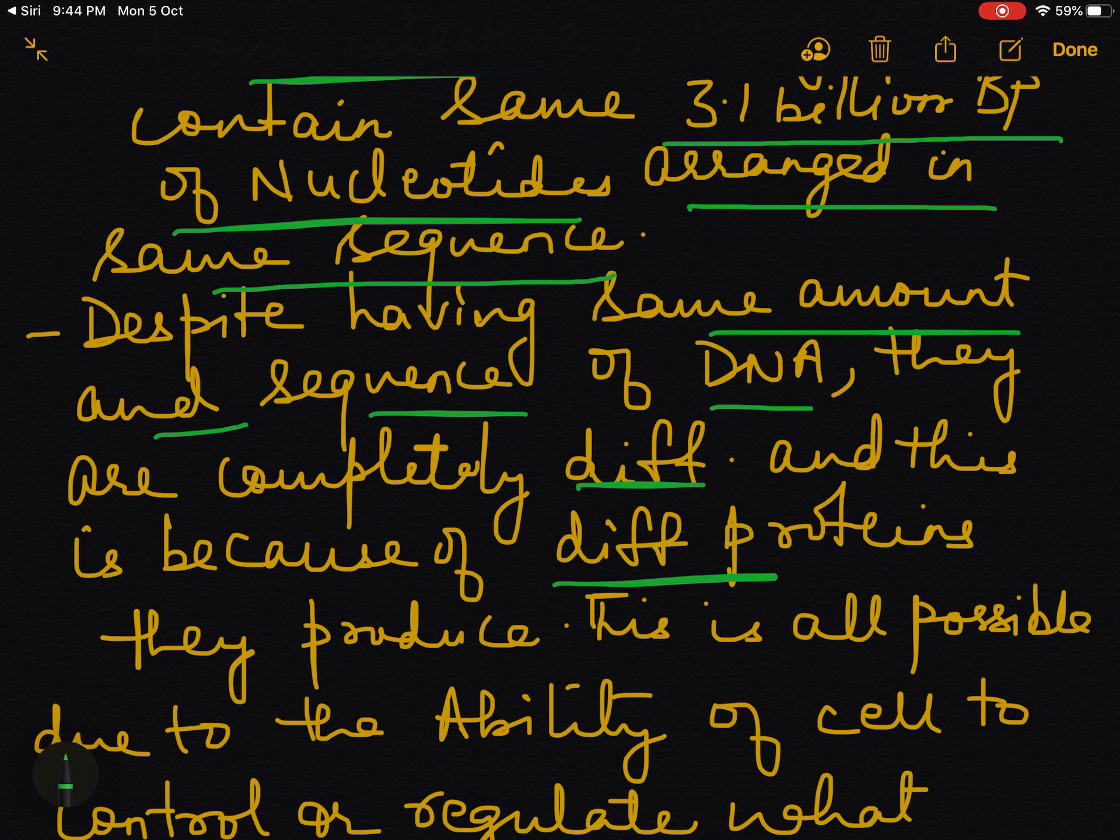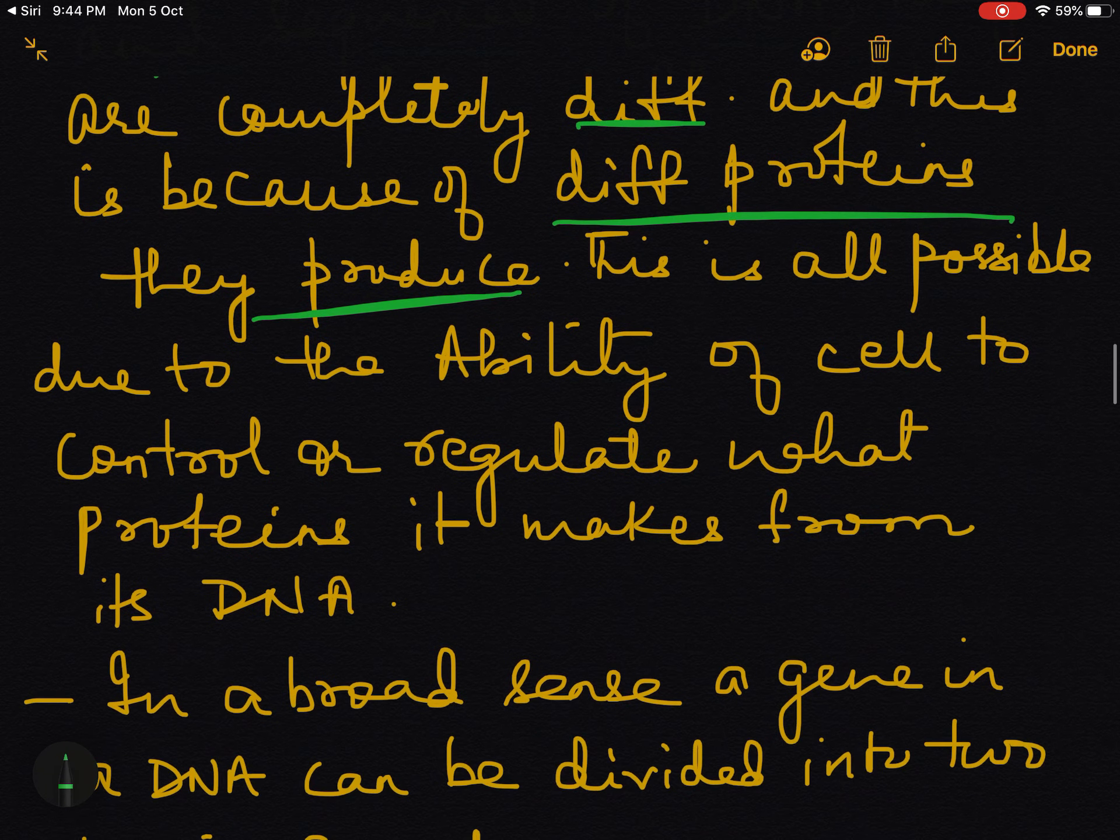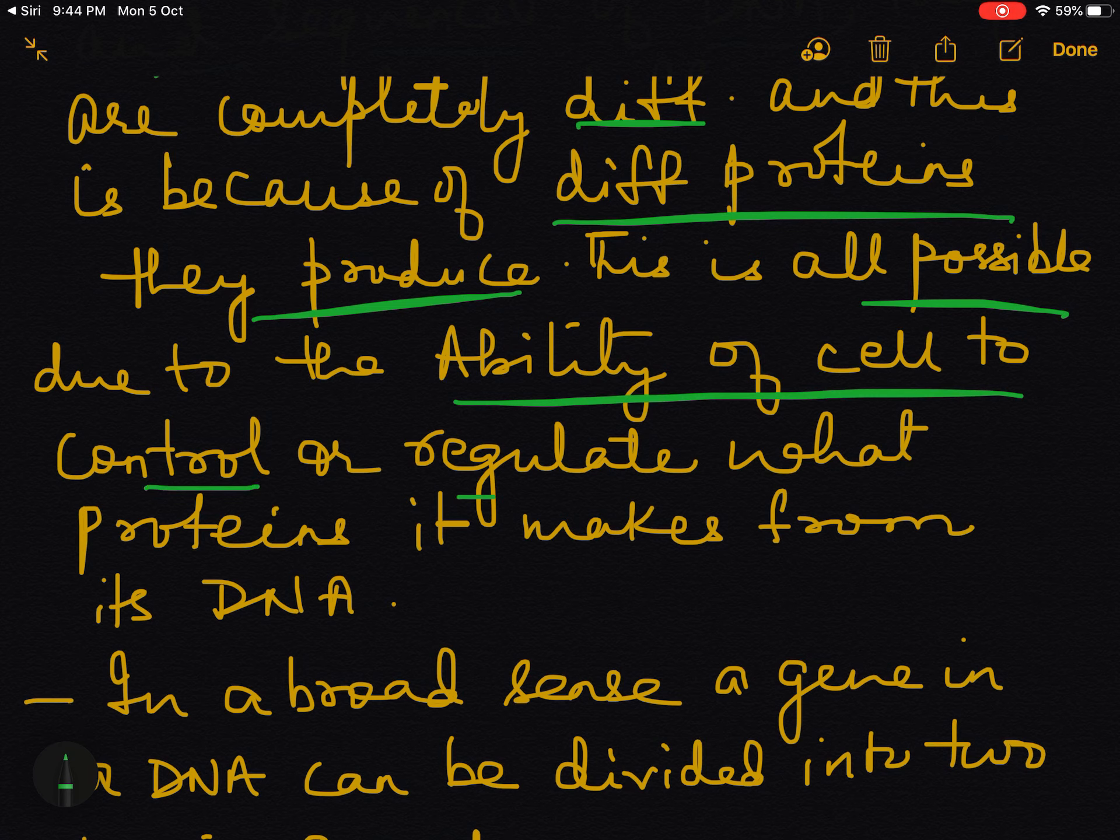Despite having same amount and same sequence of DNA, still they are completely different in shapes, size, and functions. Why? Because of different proteins they produce. This is all possible due to the ability of the cell to control or regulate what protein it makes from the DNA. This ability of the cell to control and regulate which protein to make from that DNA - this property is gene regulation.